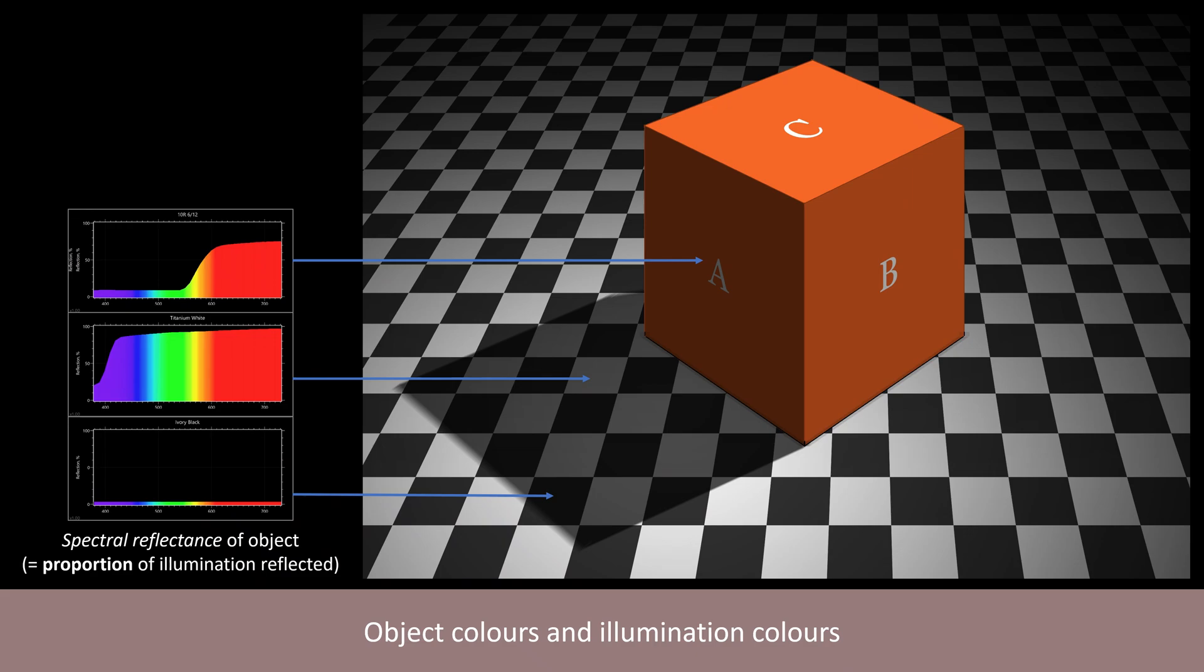So in this image we perceive a high chroma orange cube on a black and white tiled floor. And we perceive these objects as having the same colour belonging to them in the light and in the shadow.